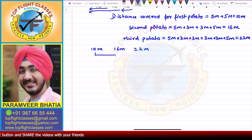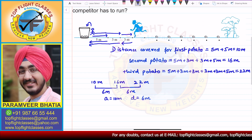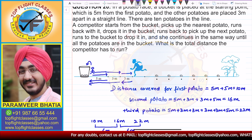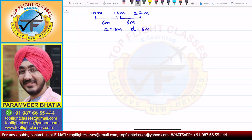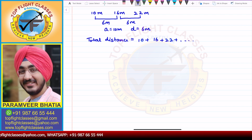If we look at the difference between the first two distances, that is 6 meters. The difference between the next two distances is also 6 meters. So the common difference is 6 meters and the first term is 10 meters. Since there are 10 potatoes, the total distance will be 10, 16, 22, and so on up to the 10th potato — that is S10.